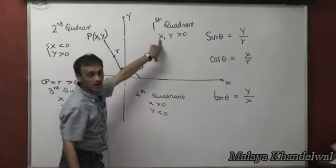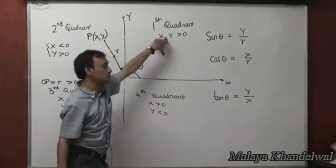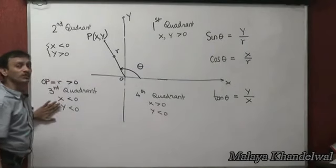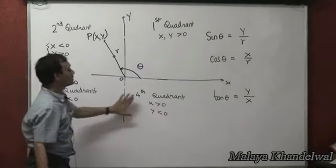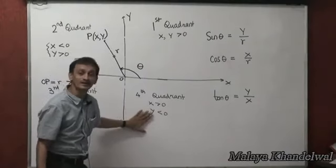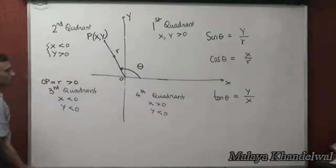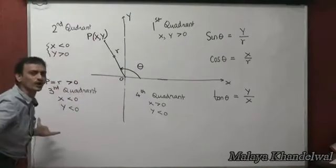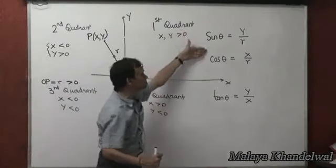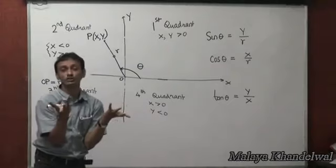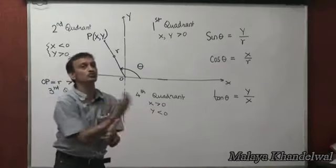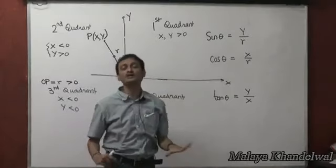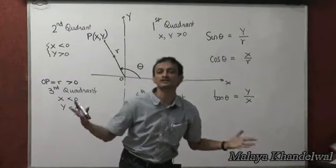In the first quadrant, x and y are positive. In the second quadrant, x is negative whereas y is positive. In the third quadrant, x is negative and y is also negative. In the fourth quadrant, x is positive whereas y is negative. This is how trigonometric ratios are defined in general, which has nothing to do with a right-angle triangle. Theta could be acute, obtuse, or any value — this is very generalized.